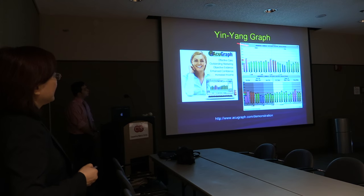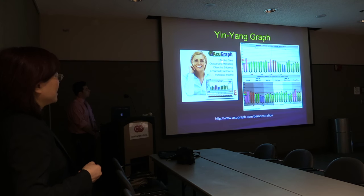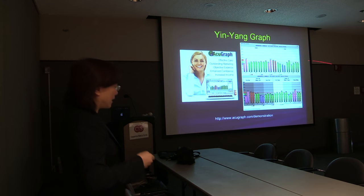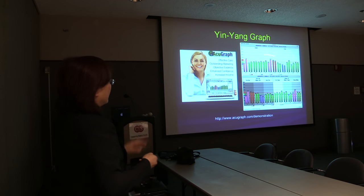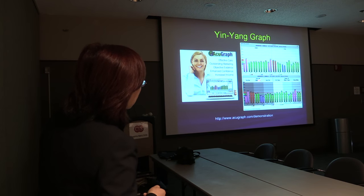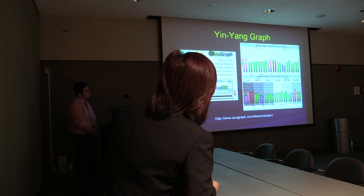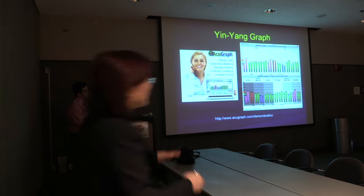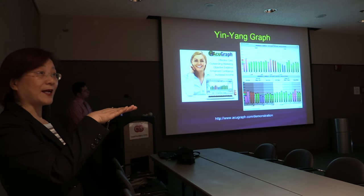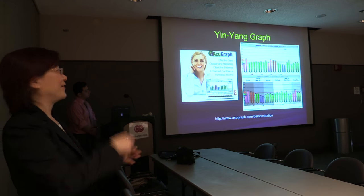Let's look at the yin-yang graph. We use the AcuGraph digital system to test the patient's energy. There are 12 meridians on this graph. You can see the yin-yang scores: the yang score is 85 and the yin score is 91. In other words, this patient's yin-yang should be balanced; however, there is a yin deficiency.